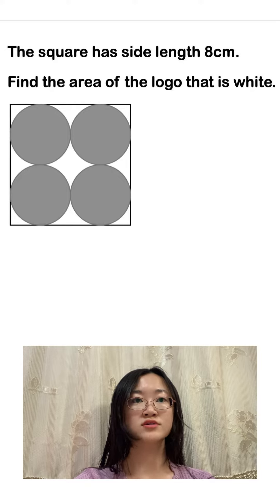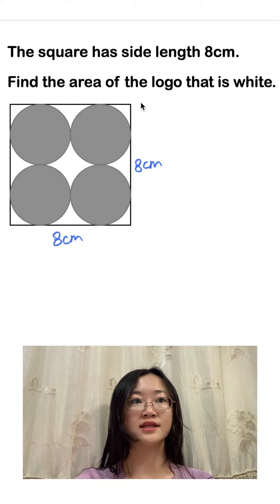First of all we know that all the sides of a square are equal, that is eight centimeters. Now to find the white area we need to find the area of the square and take that away from the area of the four circles.